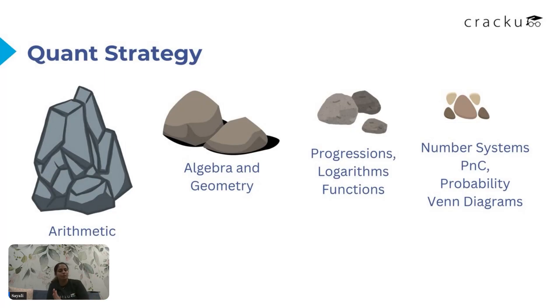Then you get number systems, P and C, probability, Venn diagrams. Probability and Venn diagrams, zero questions have come in the last many years. P and C, one question. Number systems, two questions. But that also changes depending on the year.